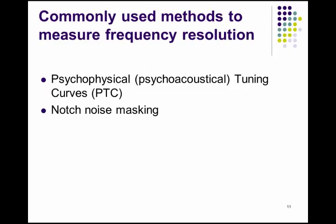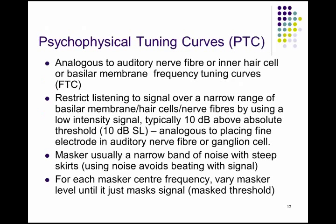How do we do that? There are two methods. One is fairly straightforward, and the other is more complicated — and that's the one we're concentrating on, of course. The first one is called psychophysical tuning curves, or PTCs. They're very straightforward and analogous to auditory nerve fibers, inner hair cells, and basilar membrane frequency tuning curves.